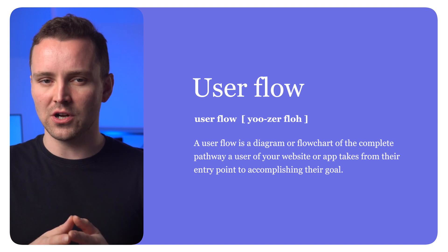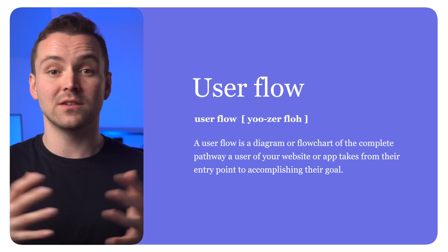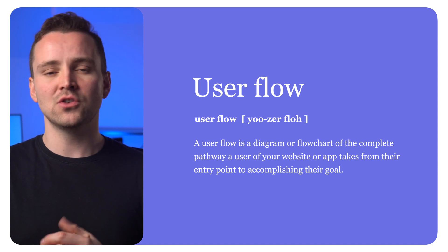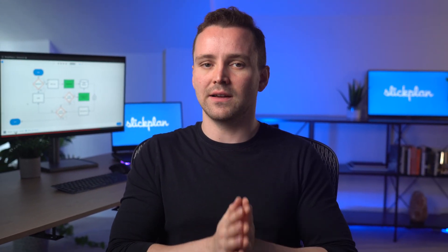A user flow is a flowchart that maps the complete pathway your site or app user takes from their entry point to accomplishing their goal, every decision point. They're more than just pretty diagrams. A user flow can turn an overcomplicated signup process into a clear, frictionless experience, for example, and ultimately keep your entire site's experience intuitive. User flows streamline planning, make team collaboration easier, and allow you to optimize your site for specific goals.